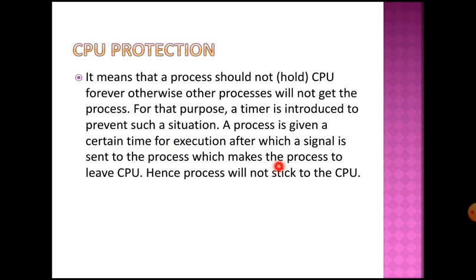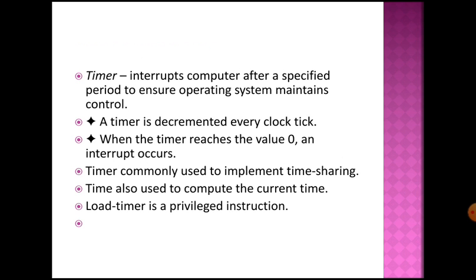A process is given a certain time for execution, after which a signal is sent to the process which makes it leave the CPU. The timer has a specified predefined value — for example, five seconds — during which the program can execute on the CPU. After five seconds, a signal is sent, and the CPU automatically releases that process after the timer expires, stopping its execution.